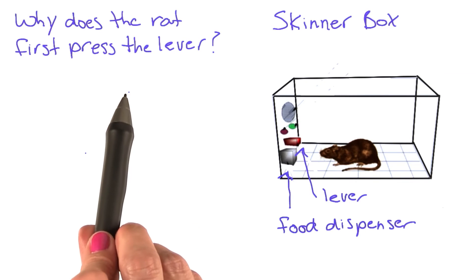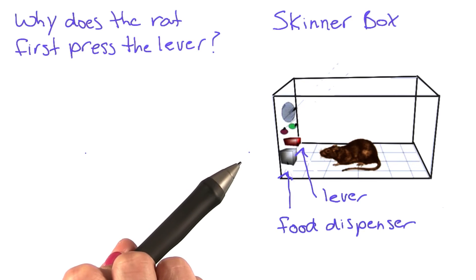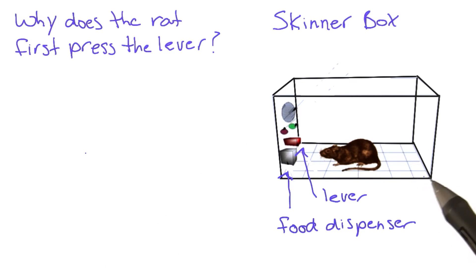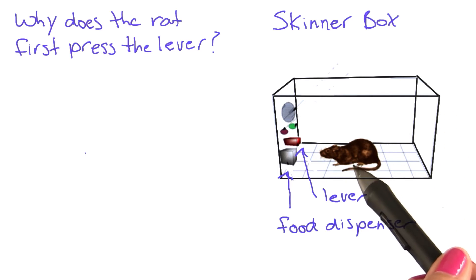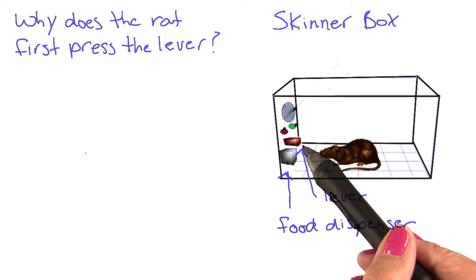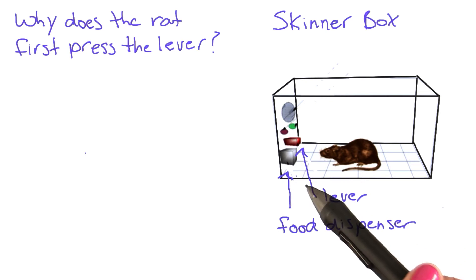First, we want to know why the rat first presses the lever. It turns out rats are exploratory creatures, meaning they will walk around their environment and check it out. When the rat is first placed in the Skinner box, it may go over to the corner, stand up and smell the walls. But eventually, it may come over and bump into the lever or stand on it to smell something up here.